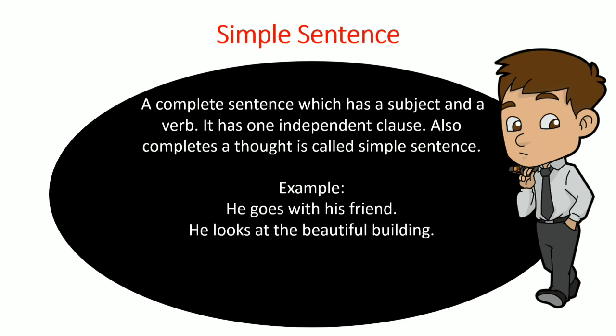It makes a complete sense: he looks — where does he look? He looks at the beautiful building. In this sentence we have one verb and one subject, and it also completes a thought. Let's see another example: 'They are in the park for enjoying.' Now can you figure out which one is the subject and which one is the verb?